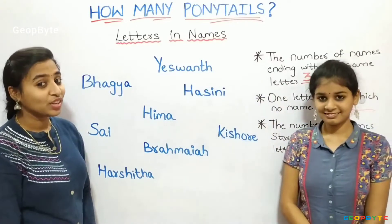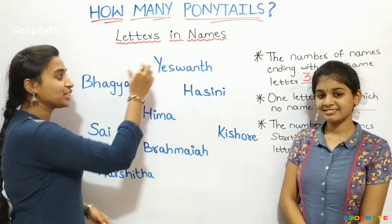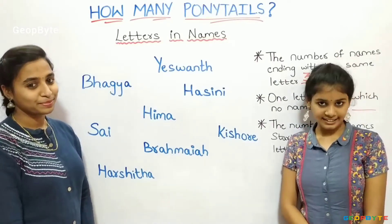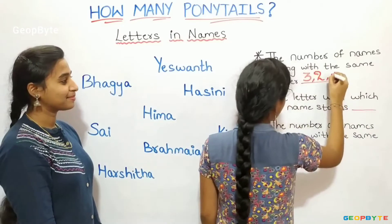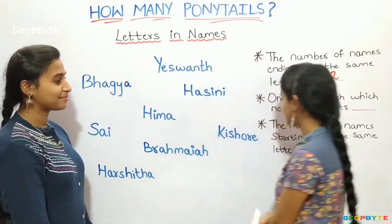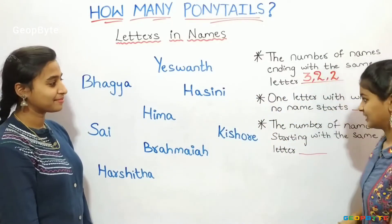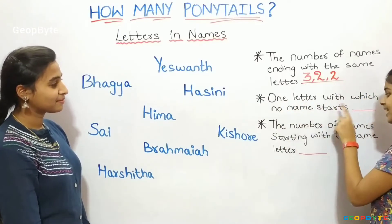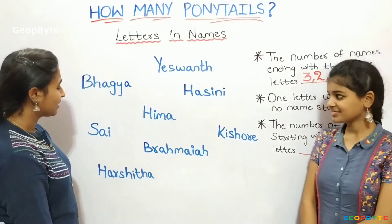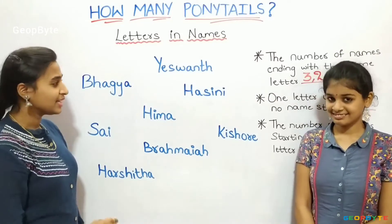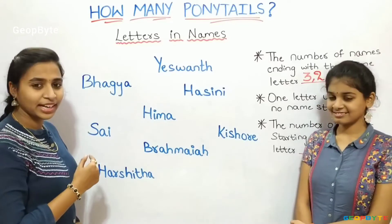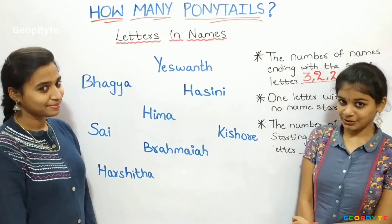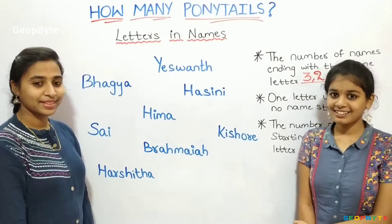We also have Brahmaya and Yashvant ending with the same letters — let us write 2. Next question: one letter with which no name starts. Children, is there any name starting with the letter L? No. So let us write L.